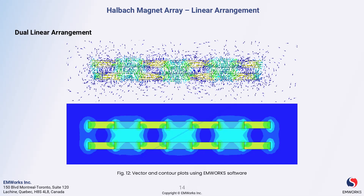While the field strength diminishes towards the ends, the contour plot complements this visualization by showing the variation in magnetic field intensity across the setup. The contours highlight areas of high and low magnetic field strength, allowing us to understand how the design affects the overall magnetic environment.